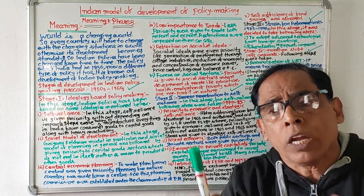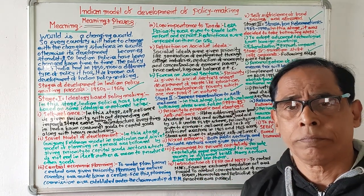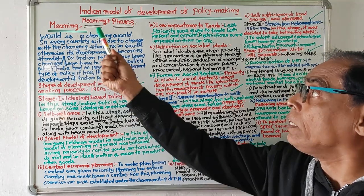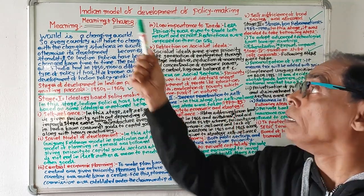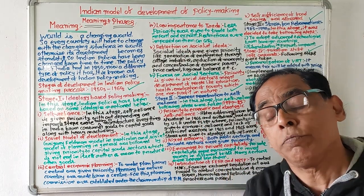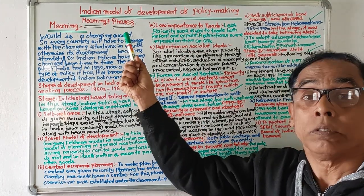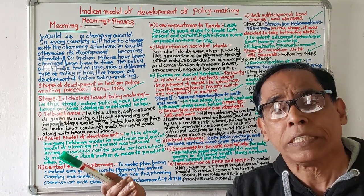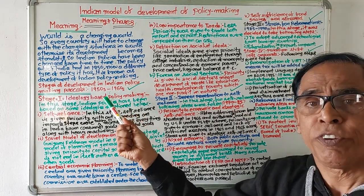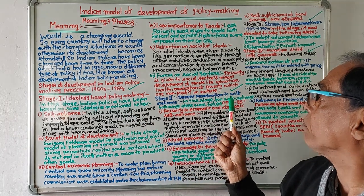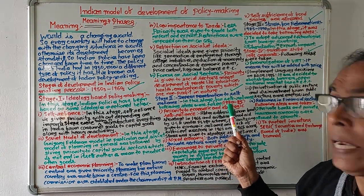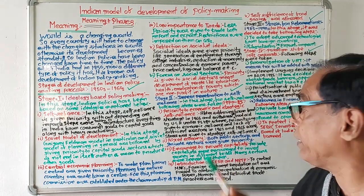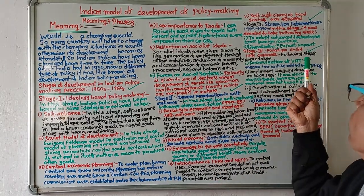Regarding the Indian Model of Development of Policymaking, we will discuss two main aspects: the meaning of the concept, and the phases in which it has changed. We will cover four stages — Stage 1 from 1950s to 1960, Stage 2 from 1970 to 1985, Stage 3 from 1985 to 1990, and Stage 4 from 1991 onwards.